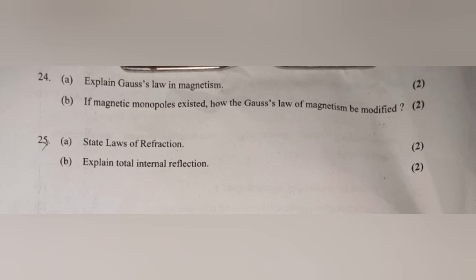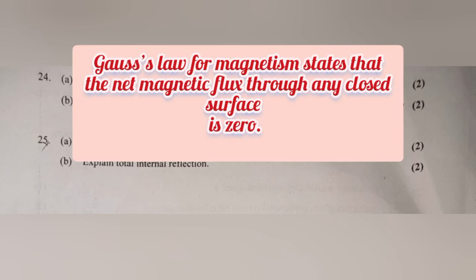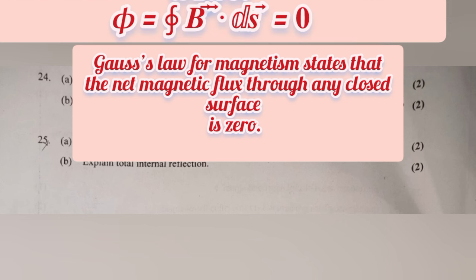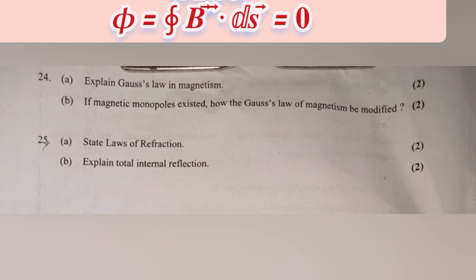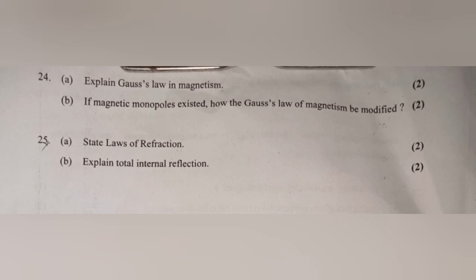Q24a: Gauss's law for magnetism states that the net magnetic flux through any closed surface is zero. Q24b: If magnetic monopoles existed, Gauss's law of magnetism would be modified to account for a net non-zero magnetic flux through a closed surface enclosing a monopole.